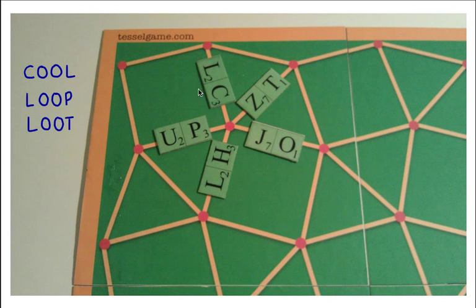Let's look at one more example. Now I am placing a new tile with two letters L and C and I can make simultaneously three words: COOL, LOOP and LOOT. I claim that all these three words are mutually exclusive.